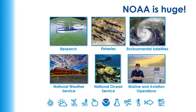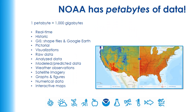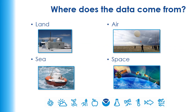Now let's talk about that data. NOAA has petabytes of data — one petabyte is 1,000 gigabytes. NOAA has tons of data available in many different formats. Nearly all data that NOAA collects is freely available for anyone who wants it. This data comes from different places: NOAA collects data from land, from the ocean, from the atmosphere, and even from space.